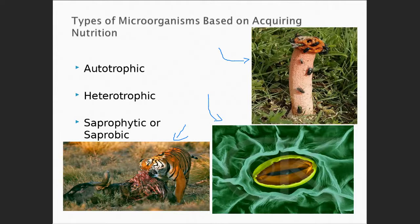When we think about these, there are really two different ways that organisms acquire nutrients, and those terms are called autotrophic and heterotrophic. As a subgroup underneath heterotroph, there's the term saprophytic or saprobic.